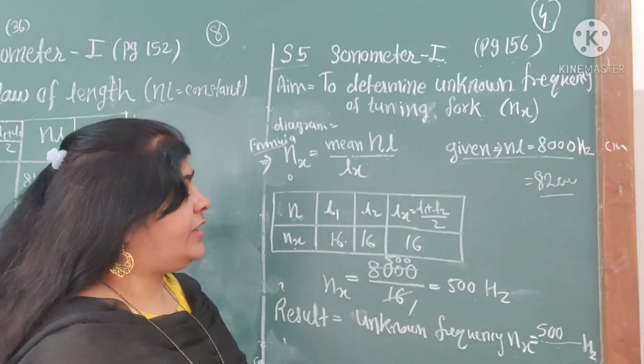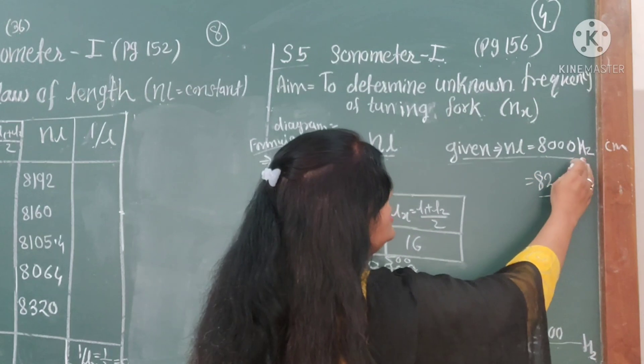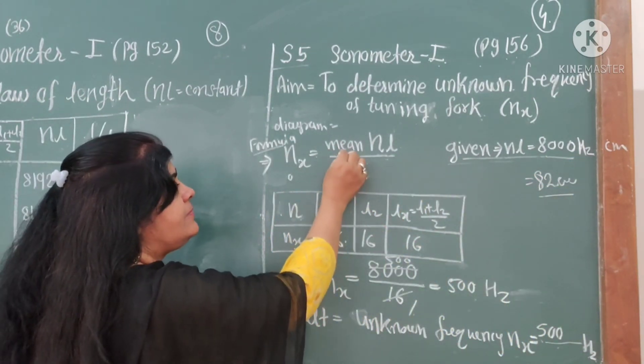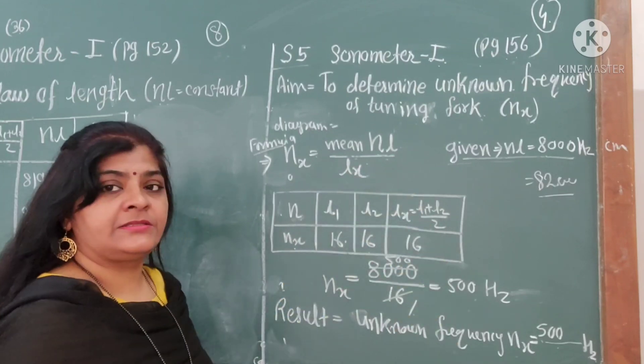Here I show one example: 8000 hertz per centimeter. The frequency formula is mean NL upon LX.